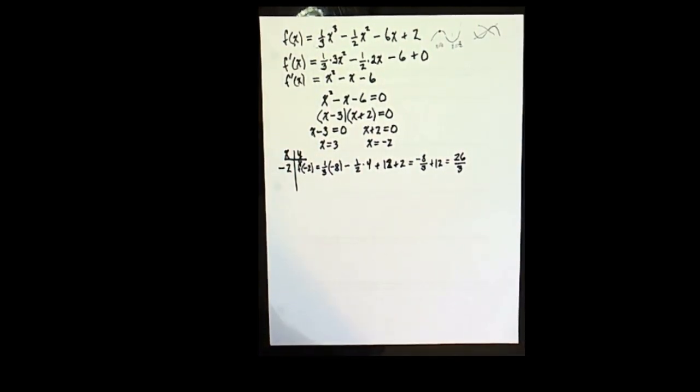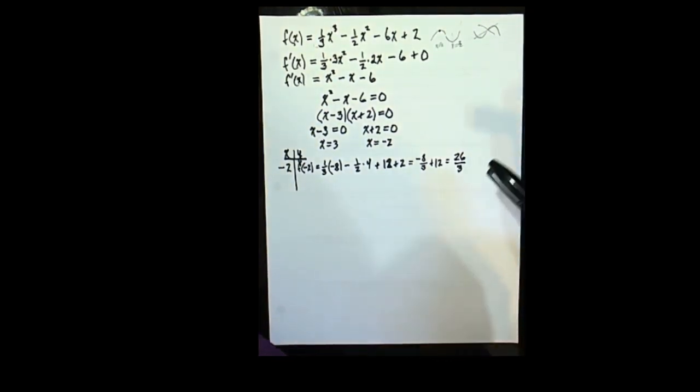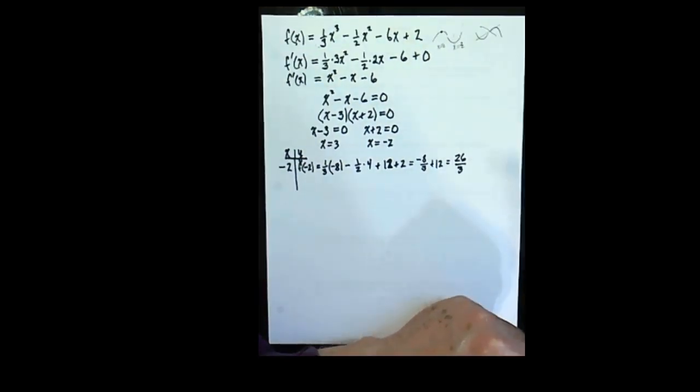That's 26 thirds. It's too bad it wasn't 27 thirds, because then it would have been exactly 9. So this height of this point is a little bit less than 9.